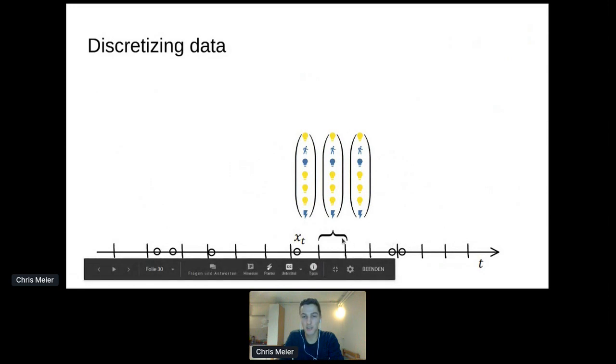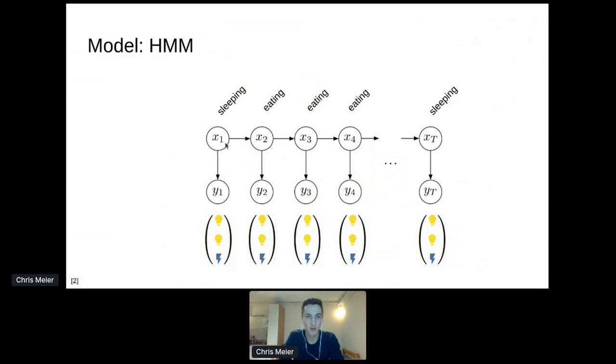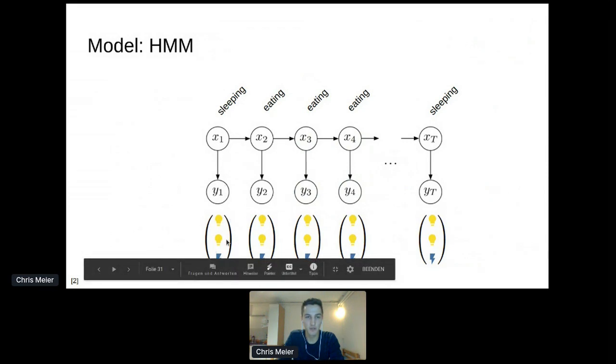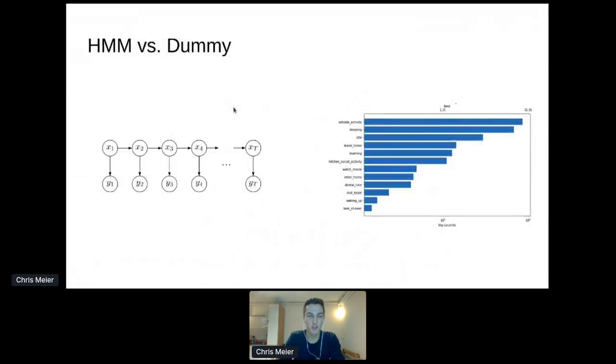Instead of assigning state vectors to events, you assign state vectors to each of these time slices. So here's the model I used - it is a Hidden Markov Model where we have hidden unobserved states corresponding to our activities. We have probabilities of transitioning between these states, and within each state we have an own probability distribution of emitting observations. For example, this would be a pretty unlikely observation having all lights turned on in the state sleeping.